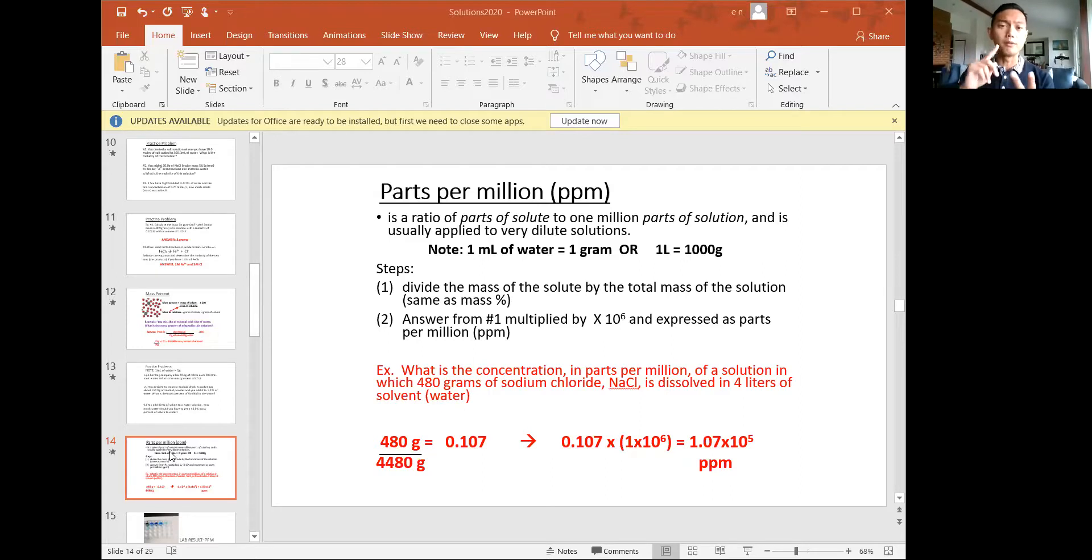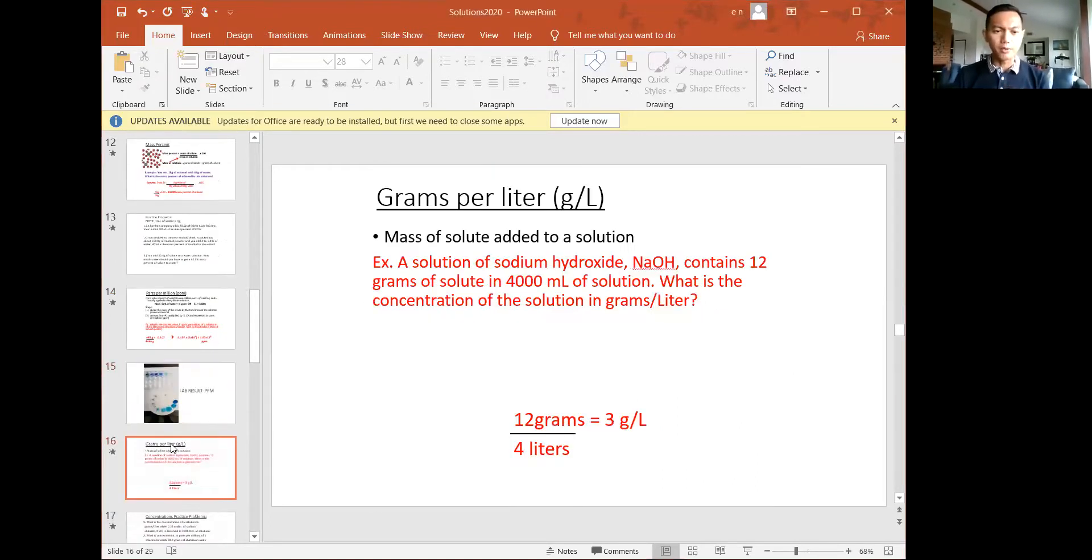So mass percent and parts per million, very similar. The only difference is what you multiply it with. All right. The next one is a very straightforward calculation because the name is the formula, grams per liter. And in this problem, they're saying what is the mass of the solute and what's the total volume of the whole solution? So in this case, we're given 12 grams of the solute. And they're telling us that the volume of the whole solution is 4,000 milliliters. And 4,000 milliliters, when turned to liters, remember the shortcut is, the actual calculation is divided by 1,000 or move the decimal place three spots to the left. So 4,000 milliliters is 4 liters. So with that, we have a solution in the bottom, it's 12 over 4, giving us 3 grams per liter. So the unit is the formula, G over L, grams per liter. So this one, out of the four new things I'm discussing today, is a bit more straightforward.